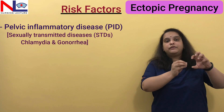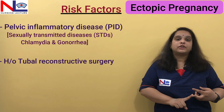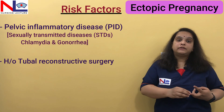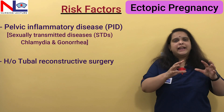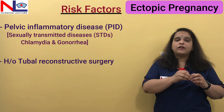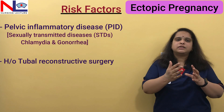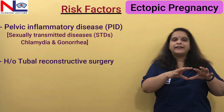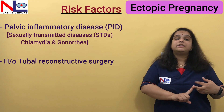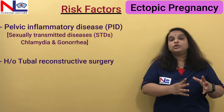If the woman had previous tubal reconstructive surgery where the tube was repaired to improve fertility, any surgery or handling of the tube can cause fibrosis or scarring. That scar again decreases motility, and once motility decreases, the fertilized ovum cannot travel along the tube. Previous tubal surgery can therefore also cause ectopic tubal pregnancy.